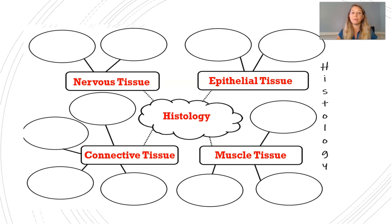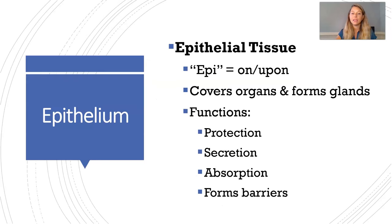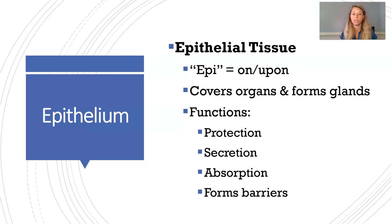Go ahead and add nervous tissue, epithelial tissue, muscle tissue, and connective tissue to your concept map. Let's start with epithelial tissue. 'Epi' means on or upon, so if we were to assign a single word to epithelial tissue, we'd call it our covering tissue — it covers many of your organs, especially hollow organs, and forms your glands. The functions of epithelial tissue are protection, secretion, absorption, and forming barriers between structures in your body.